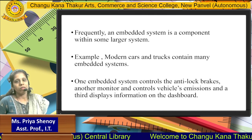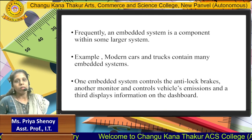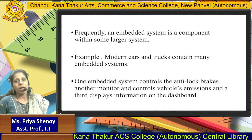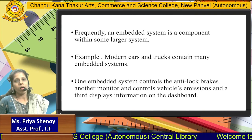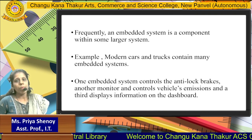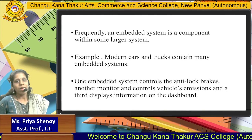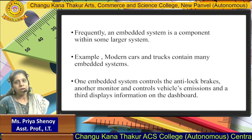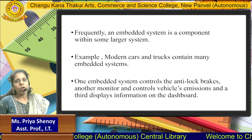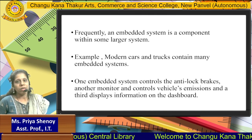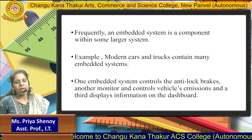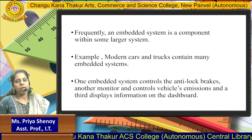In some Embedded Systems, the processor as well as the software may be hidden from the user's view or may not be visible as separate components. In those cases, the processor and the software may be included on an integrated circuit which will be performing the function on behalf of these components. But in that case the flexibility of your Embedded System will be much reduced — it will be designed to perform much lesser functionality, and if you want to make any changes the entire integrated circuit needs to be changed.